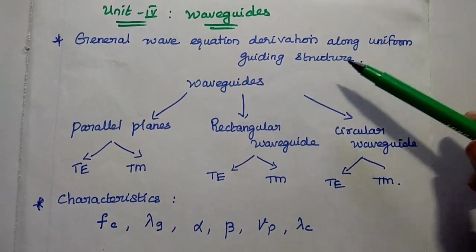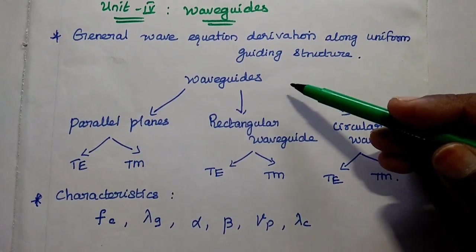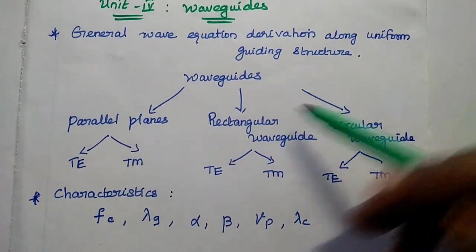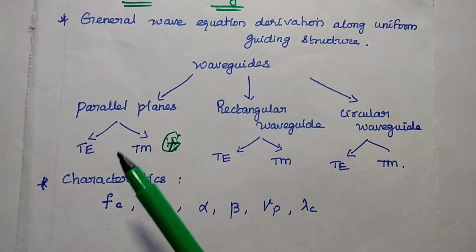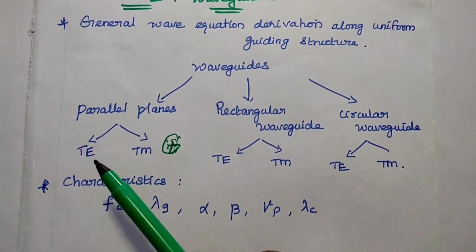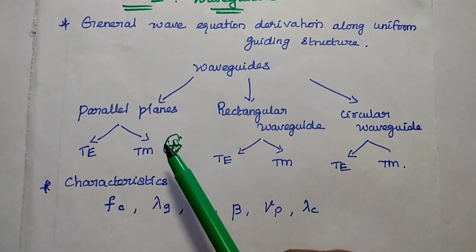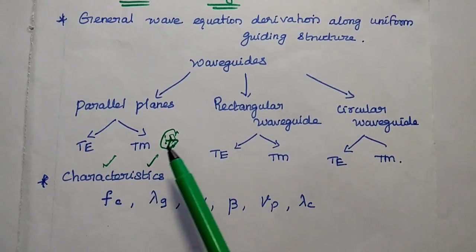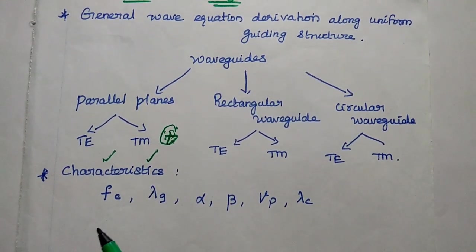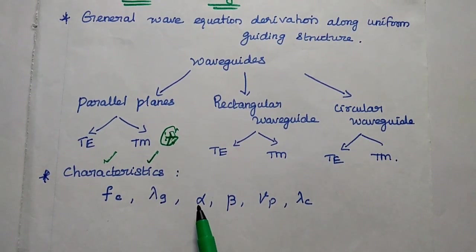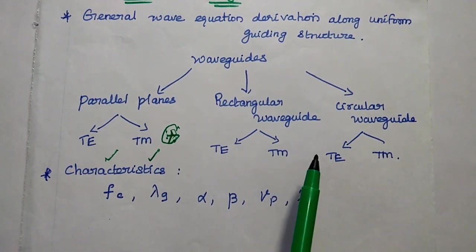The fourth unit covers three parts: parallel planes, rectangular waveguide, and circular waveguide. A waveguide is a hollow metallic tube, also called a guiding structure. We can definitely expect questions on deriving TE (transverse electric) waves or TM (transverse magnetic) waves between parallel planes or in a rectangular waveguide. We can also expect a problem in this unit — to find the cutoff frequency, cutoff wavelength, guided wavelength, attenuation, phase shift constant, and phase velocity for a given guided structure, which can be either a rectangular or circular waveguide.